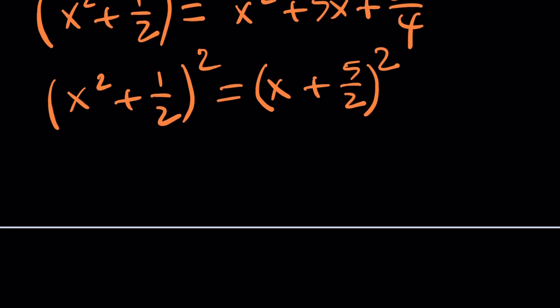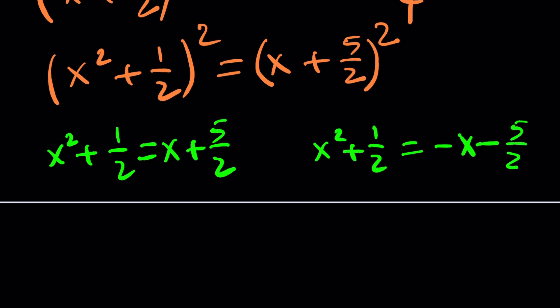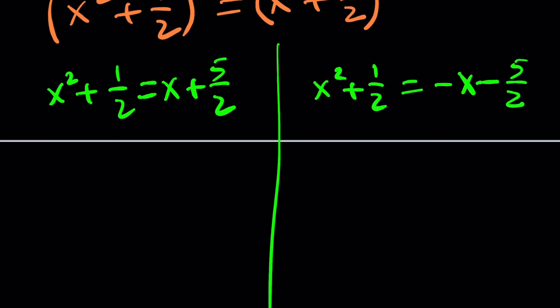Now, this is the whole purpose. We have a squared equals b squared, square root both sides. You get the absolute values, so on and so forth. And you get 2 equations. One of them is x squared plus 1 half is x plus 5 halves. The other one is x squared plus 1 half is the opposite of x plus 5 halves, which is this. And now let's go ahead and solve each equation.